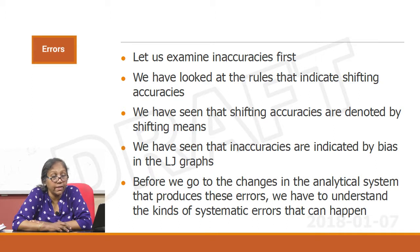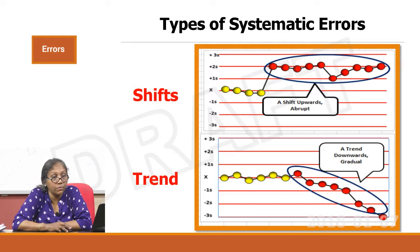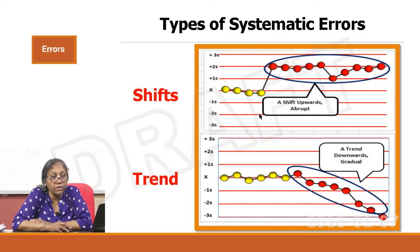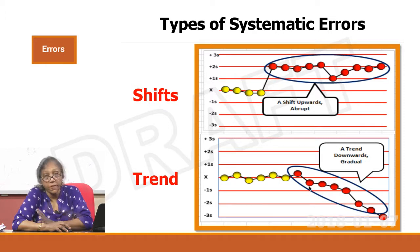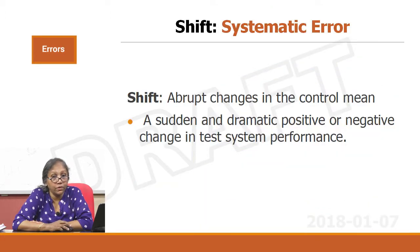Before examining changes in the analytical system that produce these errors, we need to understand the kinds of systematic errors that can happen. There are two types: shift and trend. A shift is a sudden, abrupt change in your mean — the mean was stable and suddenly shifts up or down. A trend is a gradual upward or downward drift, and the 7T rule is one that will pick up a trend.